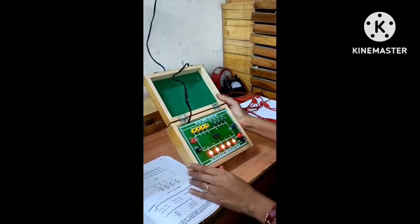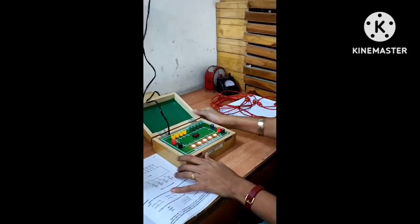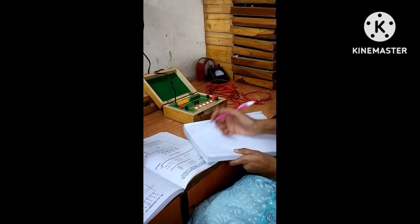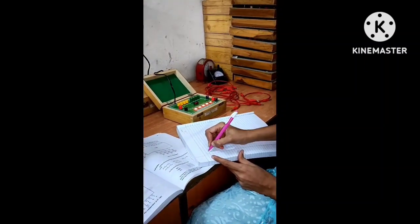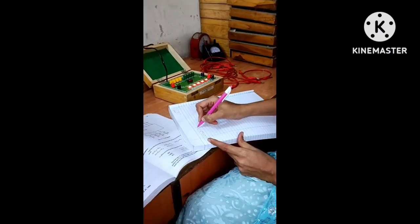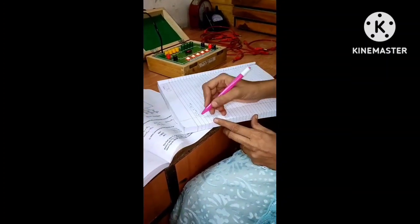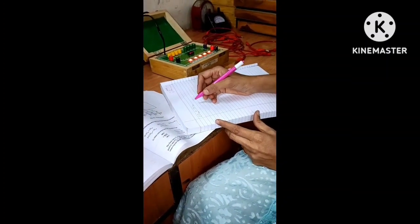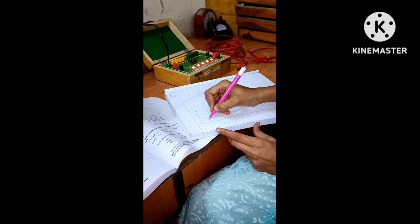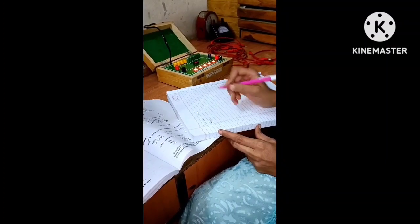To perform addition we need binary data. Suppose the given data is we have to add 1 decimal to 2 decimal. First we have to convert this data into its equivalent 4-bit binary representation.